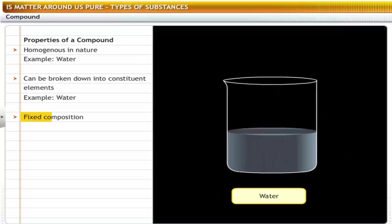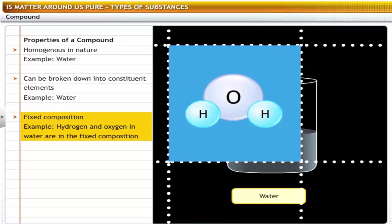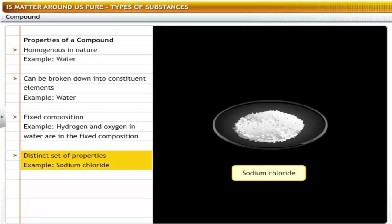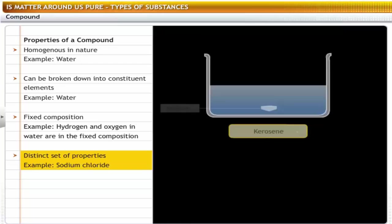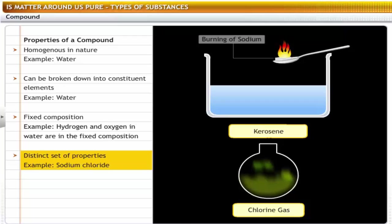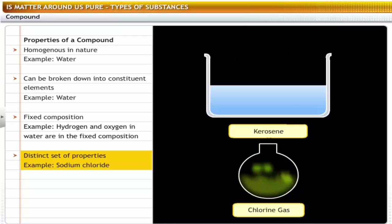A compound has a fixed composition — for example, a water molecule is always composed of two hydrogen atoms and one oxygen atom. A compound has a distinct set of properties which is not similar to the properties of its constituent elements. For example, sodium chloride, or table salt, is a harmless white crystalline solid. On the other hand, its constituents — sodium is a grayish white solid and chlorine is a greenish yellow gas — are potentially dangerous. Sodium is a highly reactive metal which catches fire when exposed to air, and chlorine is highly poisonous.